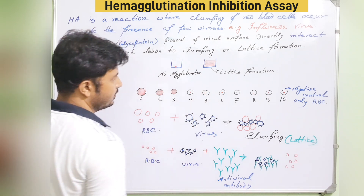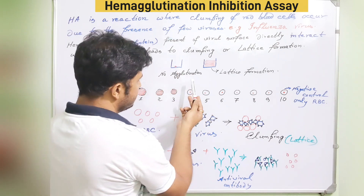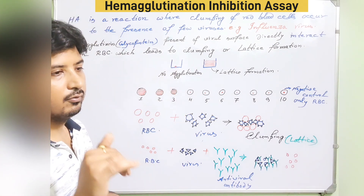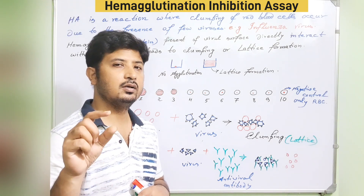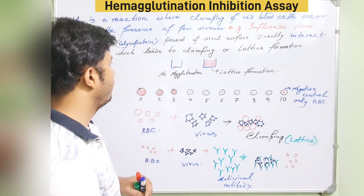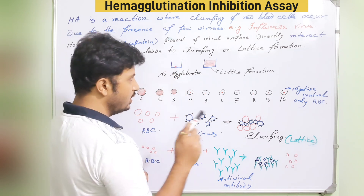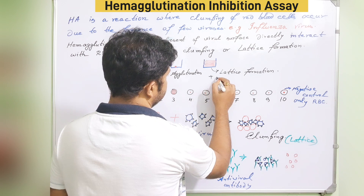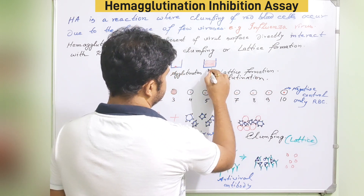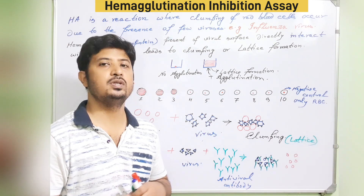To diagnose in the lab whether hemagglutination is positive or negative, you need to know what it looks like. If there is no agglutination, the RBCs will form a clear dot — a simple soft mat — when observed from above in polystyrene wells. If lattice formation is present, that is a positive agglutination result.